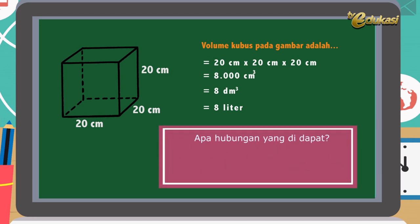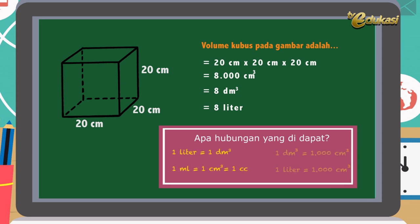Anak-anak, apa hubungan yang didapat? Betul! Berarti 1 liter sama dengan 1 desimeter kubik. Atau tambahan untuk kalian: 1 mL sama dengan 1 cm³, atau sama dengan 1 cc. Hubungannya: berarti 1 desimeter kubik sama dengan 1.000 cm³, atau 1 liter sama dengan 1.000 cm³. Jelas anak-anak?